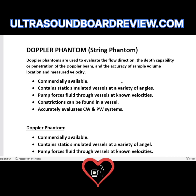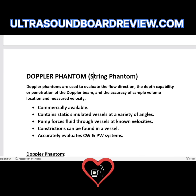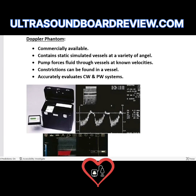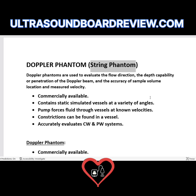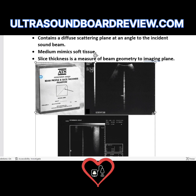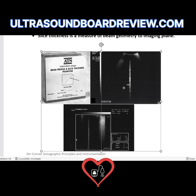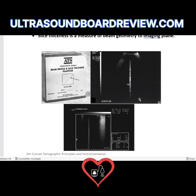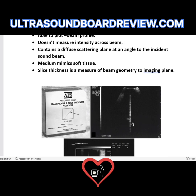Then we have the Doppler phantom, also called the string phantom. It determines how accurate your pulse wave and continuous wave Doppler is, as well as your color flow Doppler. It calibrates the ability to test your pulse wave at certain depths — like your depth resolution, depth specificity, and so on. They could show you a certain phantom and your job is to identify which one it is. If you see an image with a bright echogenic line going all the way down, separated in certain spots almost equally, that's a slice thickness phantom.